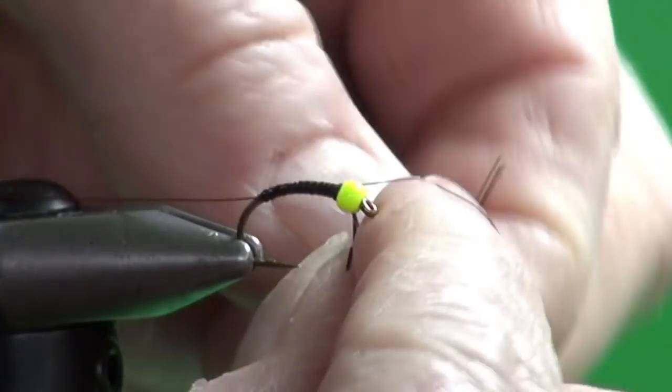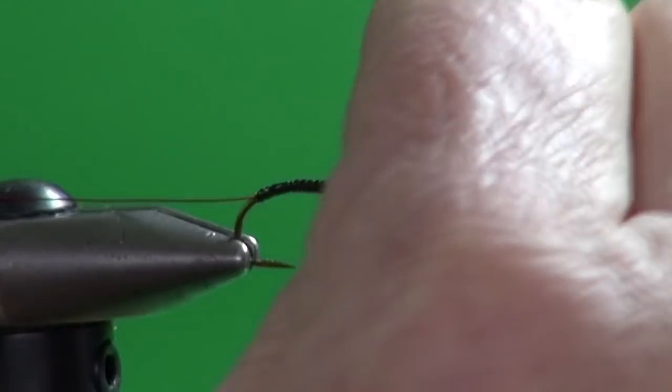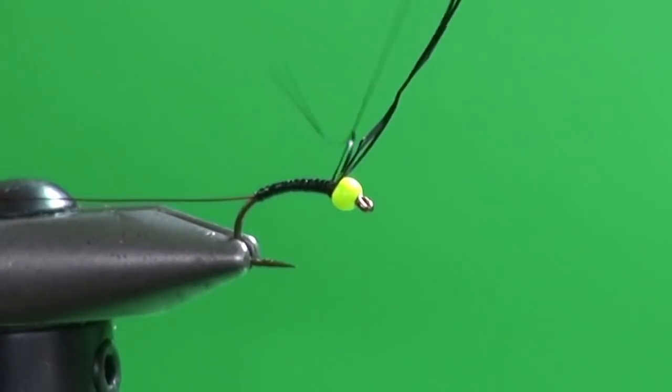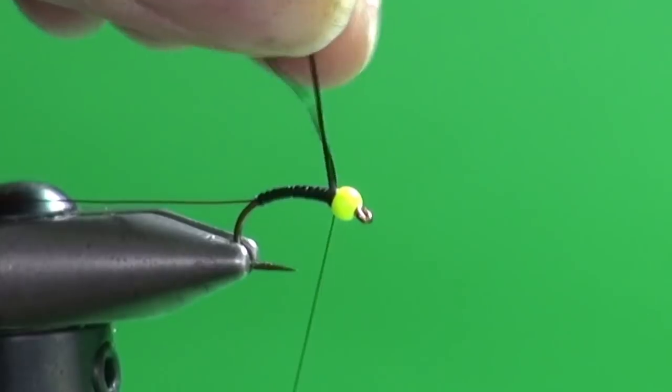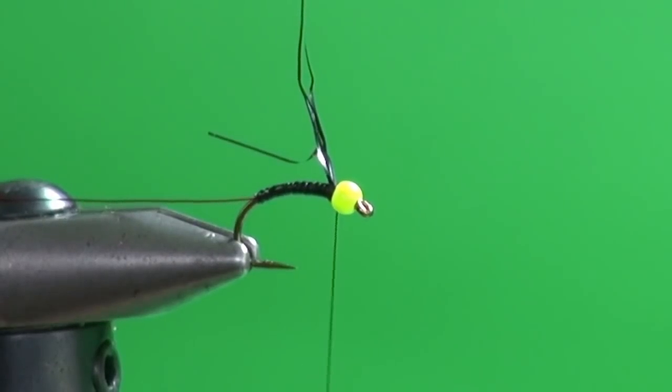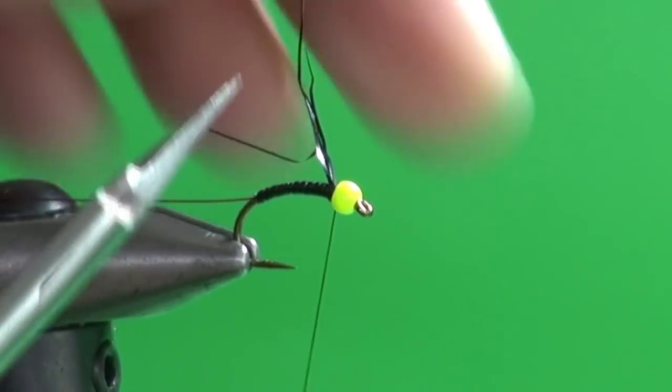And just wind those wraps right up tight into the bead. And the beauty of this super glue method too is if you slip your grip, there's a pretty good chance that that material won't unwind because the super glue will hold it down.